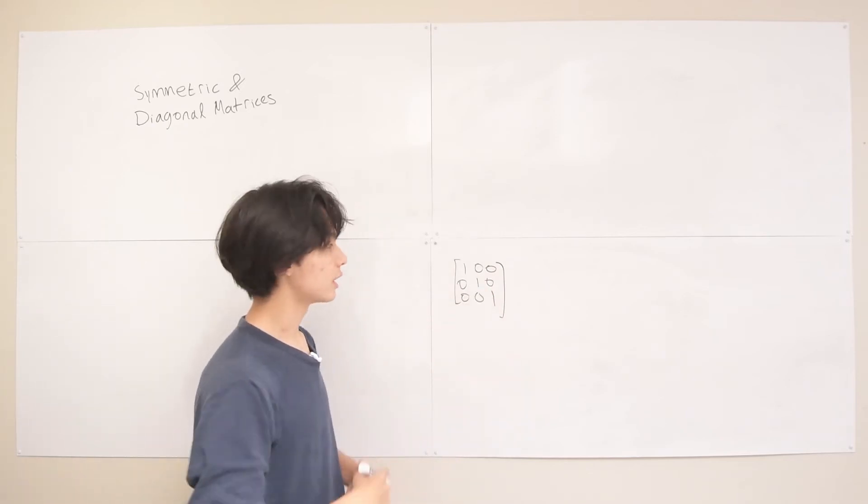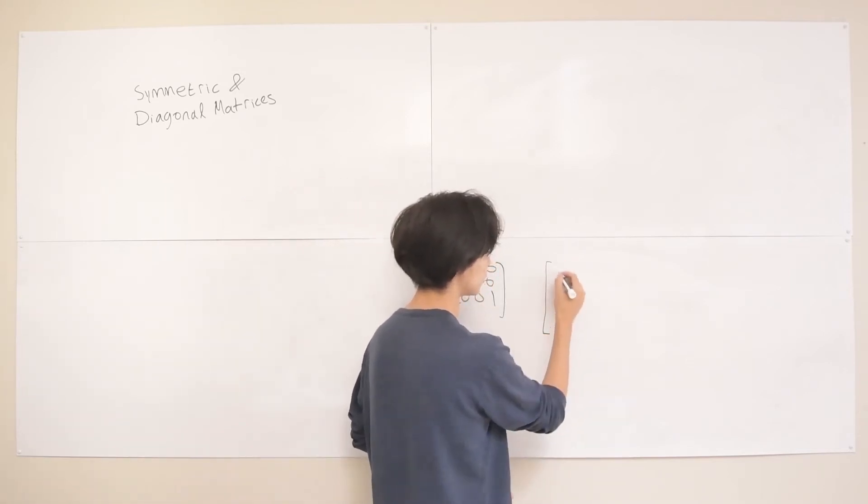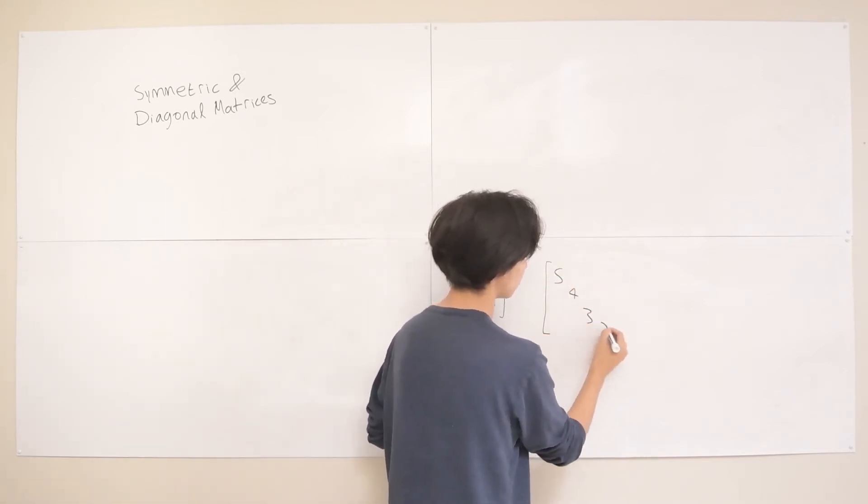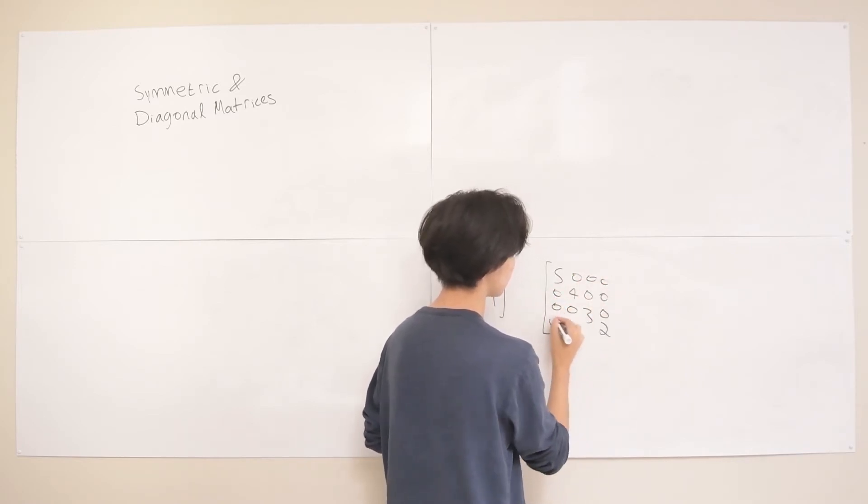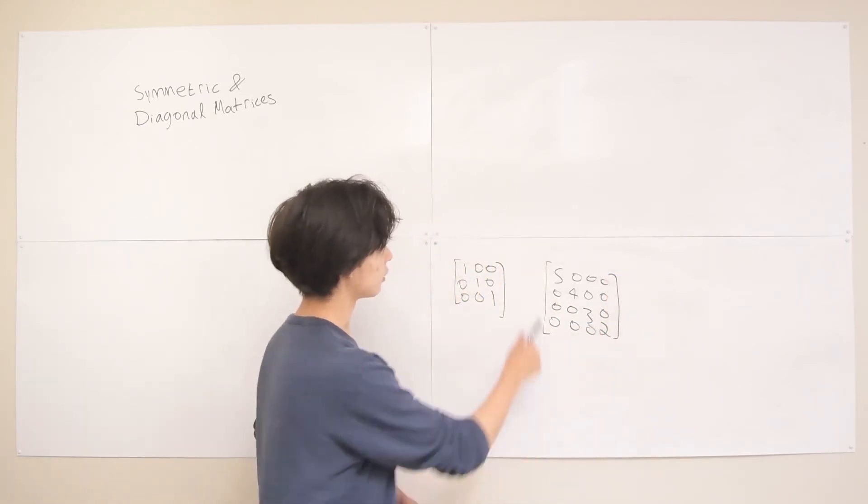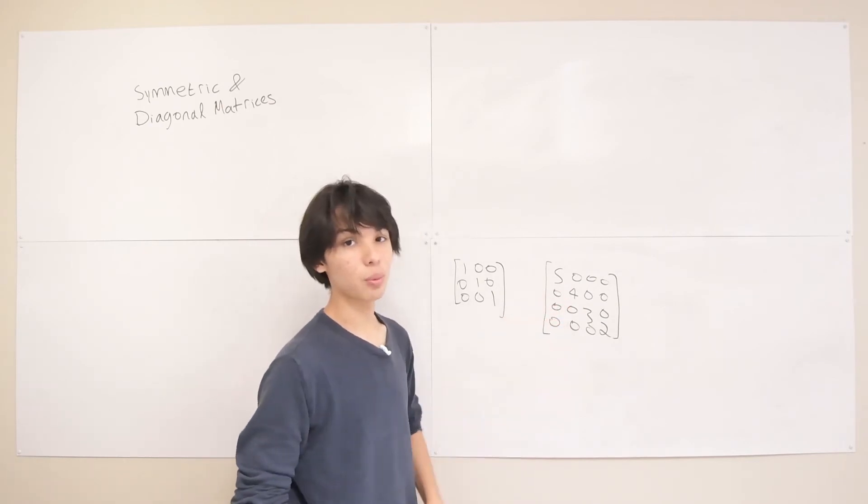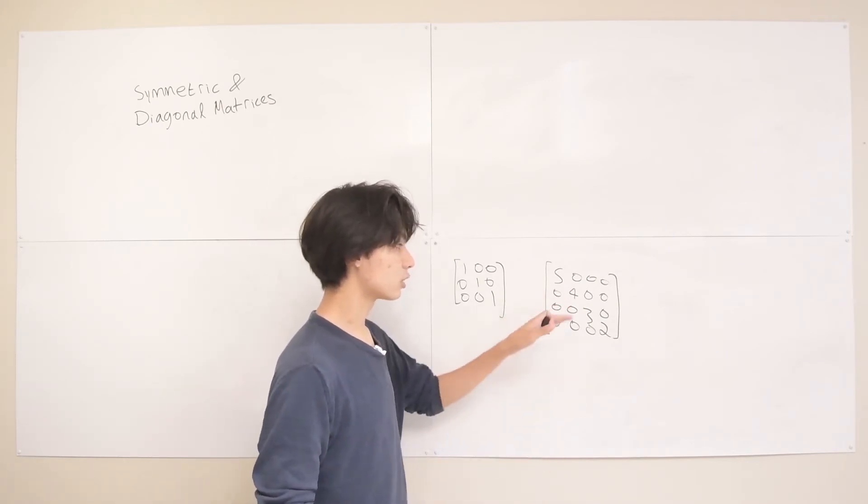And basically, generally, a diagonal matrix is any matrix where you have any numbers on the diagonal, and then 0s absolutely everywhere else, no exceptions. That's a pretty easy way to remember it, basically across the diagonal. This is kind of a very inefficient way to portray a diagonal matrix because you're writing so many 0s.